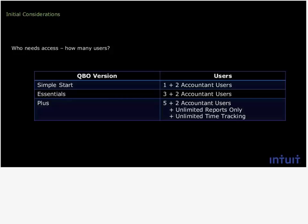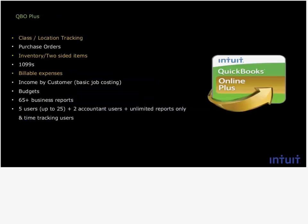Essentials is the most popular version, followed closely by Plus, then Simple Start. We just reduced the retail price on QBO. Retail pricing: Plus is $30 a month, Essentials is $19.99, and Simple Start is $10 — we dropped it $10, $7, and $3 respectively. With wholesale billing, you can get Plus for $15 a month for life, which gets you five users plus full AR/AP and everything else Plus has.